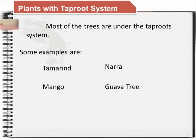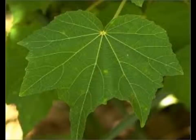One way of determining if a plant is a taproot or not is through its leaf. If it has netted venation or netted veins on the leaf, it is considered as taproot.